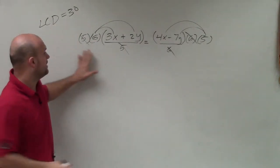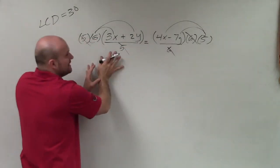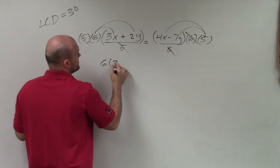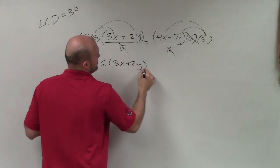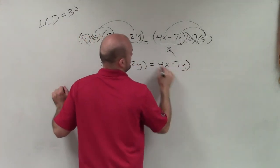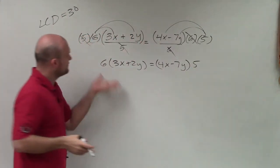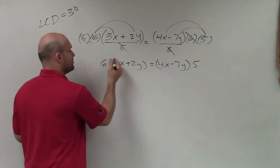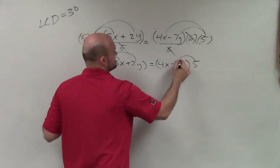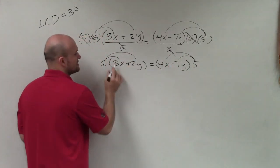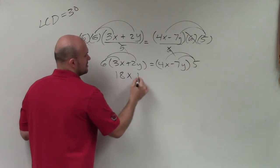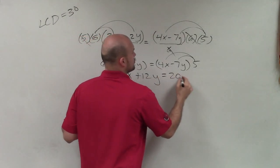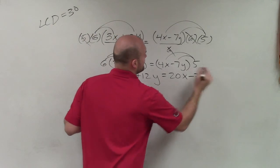So now I do not have any fractions, so I'm going to rewrite this. It doesn't matter if your number is in front or after your parentheses, you still need to apply the distributive property, which is telling you you're going to multiply that term times both these terms. So 6 times 3x is 18x plus 12y equals 20x minus 35y.